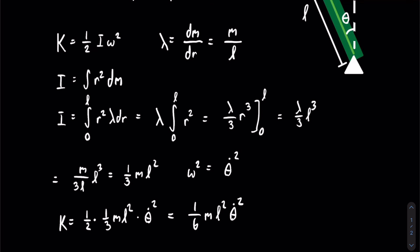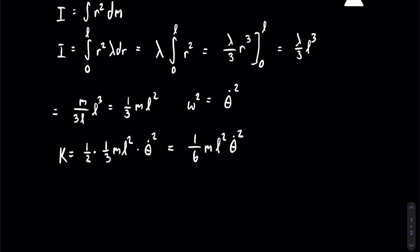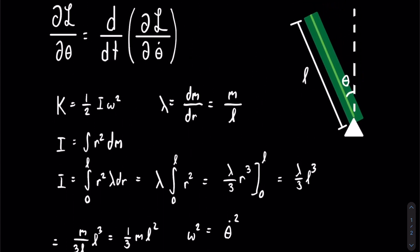Next, we need the potential energy. In this case, it's just gravitational potential energy. Let's look back at our diagram. We need to know where the center of mass of the stick is using the angle.